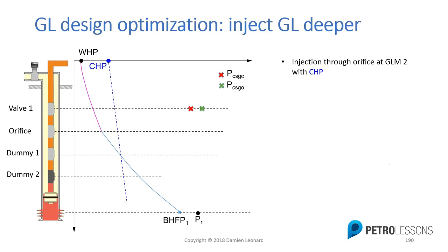After taking a look at the first way to optimize a gas lift well — adjusting its gas lift rates — let's take a look at the second way to optimize a gas lift well. The second way is to change its design so that you can inject gas lift as deep as possible. We're going to look at several cases to see how this can be achieved.